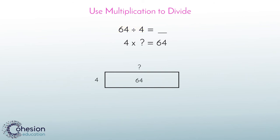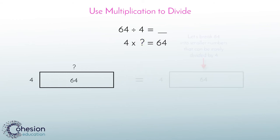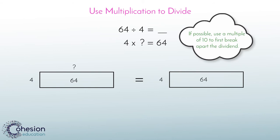If you notice, our model represents a figure that is a total of 64. The vertical side of the figure is 4 and the horizontal side is missing. We need to find the missing side to figure what number multiplied by 4 equals 64. To do this, we will break 64 into two smaller numbers that can be easily divided by 4.